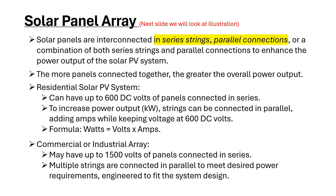There are basically two ways to connect panels: series and parallel, or a combination of both. The more panels you connect, the greater the overall power output. Remember: watts equals volts times amps. For residential solar PV systems, you can have up to 600 volts DC with panels connected in series. Strings can then be connected in parallel to increase output, adding the amps while keeping the volts the same. In commercial and industrial applications, it may go up to 1500 volts, with multiple strings connected in parallel to meet the desired power requirement.